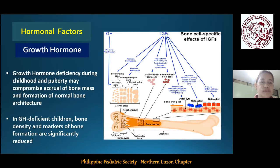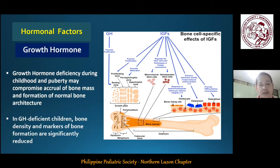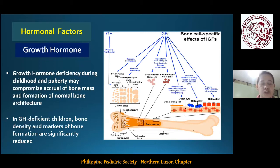Although growth hormone is responsible for longitudinal bone growth, it also plays an important role in building and maintaining bone mineral density and in altering bone architecture throughout life. Growth hormone, by acting directly and by stimulating insulin-like growth factor 1 (IGF-1), is essential for achieving peak bone mass. In the growth plate, IGFs promote clonal expansion of chondrocytes at the proliferation zone and cellular maturation of pre-hypertrophic chondrocytes. During bone modeling and remodeling, IGFs enhance osteoblastogenesis and promote matrix deposition and mineralization. Growth hormone deficiency during childhood may compromise accrual of bone mass and formation of normal bone architecture, because a significant amount of bone mass is achieved by the end of puberty.